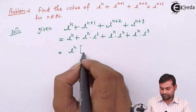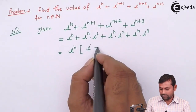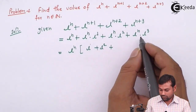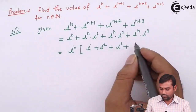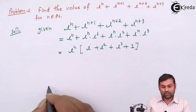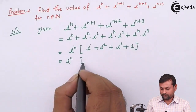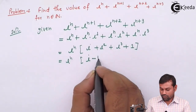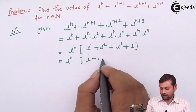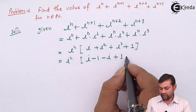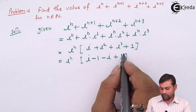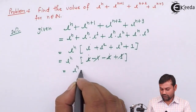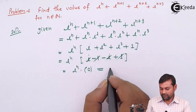Taking i^n common, the bracket becomes: 1 + i + i² + i³. Now substituting values: i² = −1, and i³ = −i. So the bracket becomes 1 + i + (−1) + (−i), which gives 1 − 1 + i − i = 0. Therefore the entire expression equals i^n × 0 = 0.